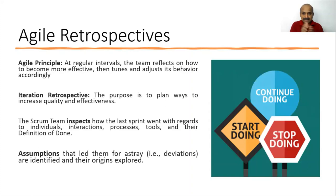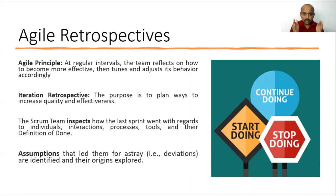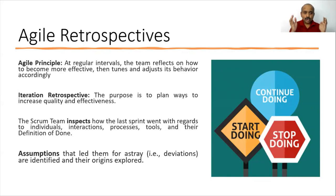If you are in Scrum and adopting sprints, you call them sprint retrospectives. If you are in Kanban, you say iteration retrospective, but those intervals should be regular. If you are conducting a retrospective at the end of a two-week sprint, it is called a sprint retrospective. The purpose of this is to plan ways to increase quality and effectiveness.